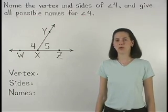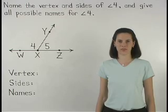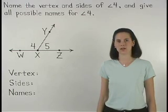In this problem, we're asked to name the vertex and sides of angle 4, then give all possible names for angle 4.